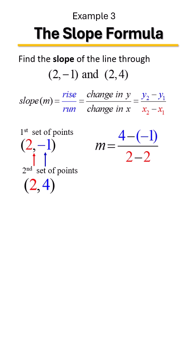On top, notice you have double negatives, negative 1, but with a negative in front of it becomes plus 1. 4 plus 1 will give us 5. We have a zero on bottom.